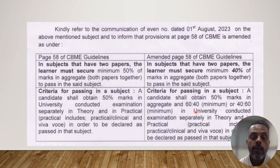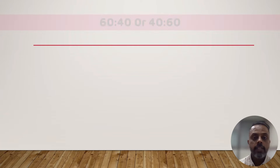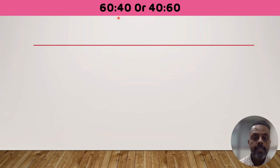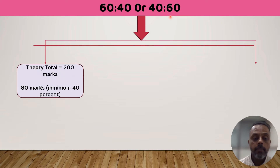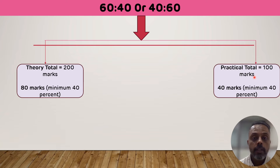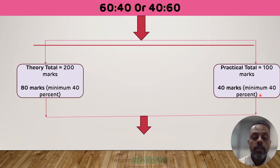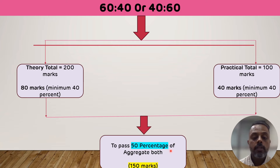Now let's understand this new rule by seeing different scenarios. In either scenario — 60-40 or 40-60 — a student has to score a minimum of 40% in theory as well as in practical. That means in theory, out of 200 marks, a student has to score minimum 80 marks, which is 40%. In addition, there is the 50% aggregate requirement, meaning a student must score 50% of the combined total. Out of 300 marks, the student has to score minimum 150 marks to pass.